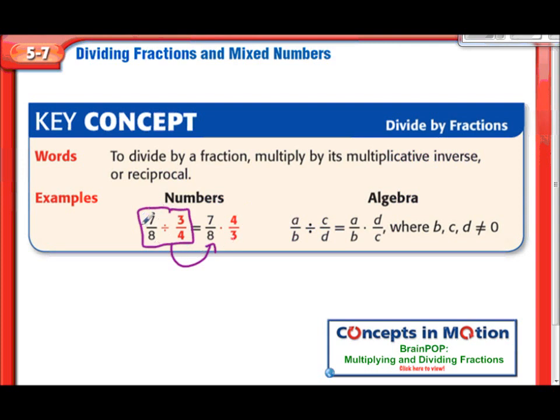The first fraction stays the same at 7-8ths. Division, however, becomes multiplication, and 3-4ths becomes 4-3rds. That's where it says multiply by the multiplicative inverse. So we're multiplying by the multiplicative inverse of 3-4ths.